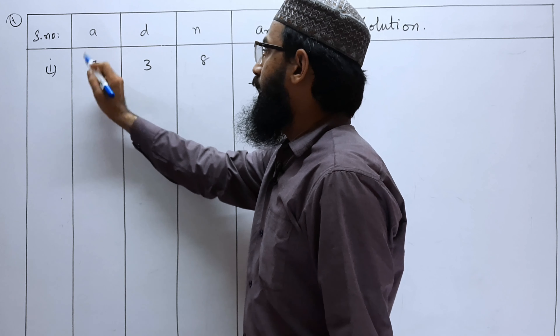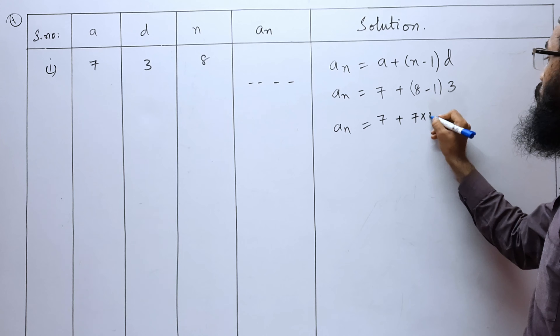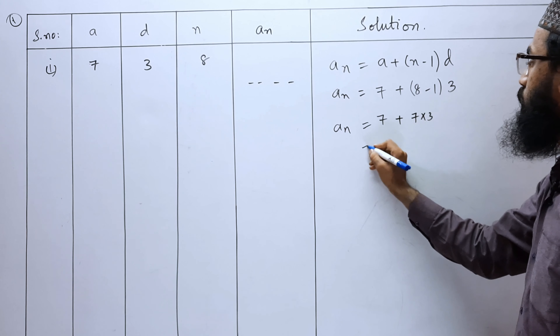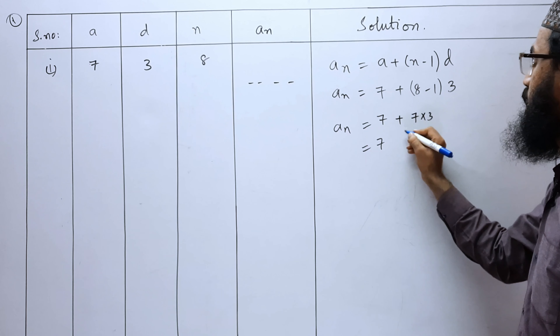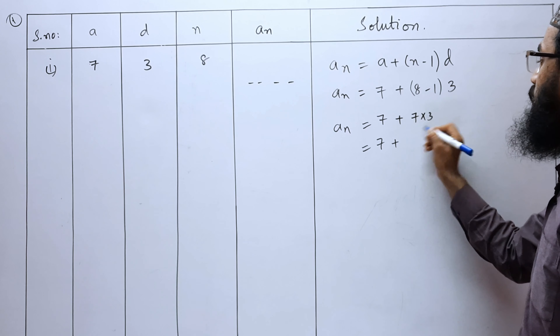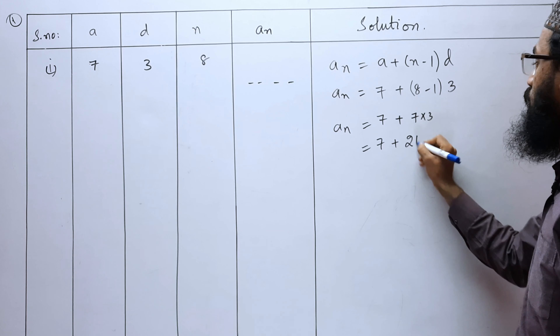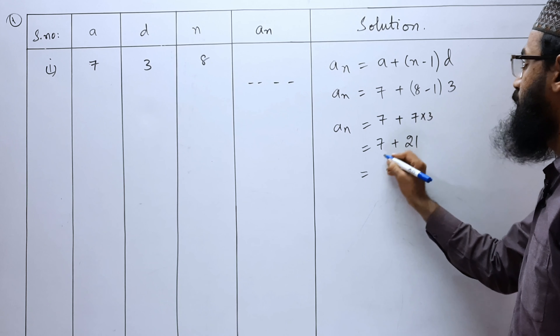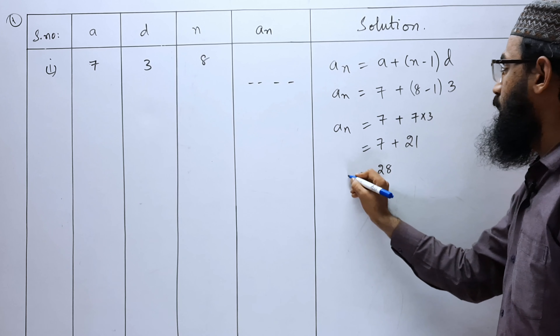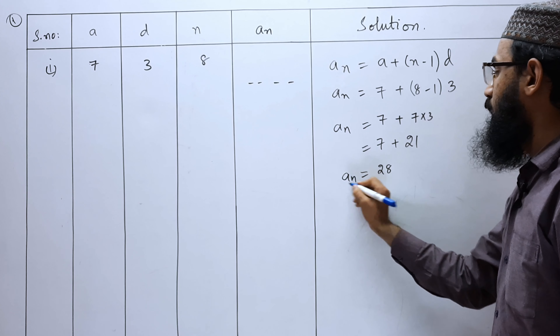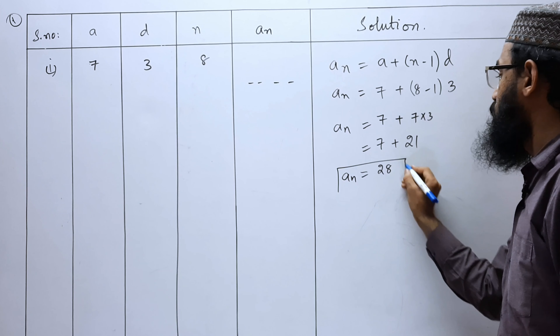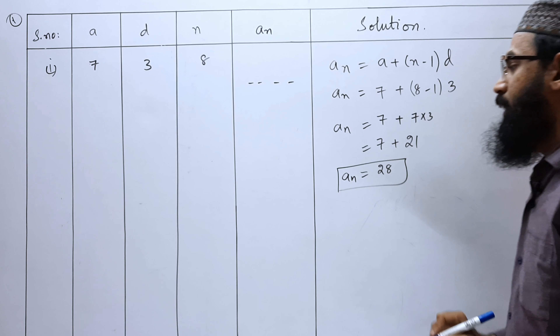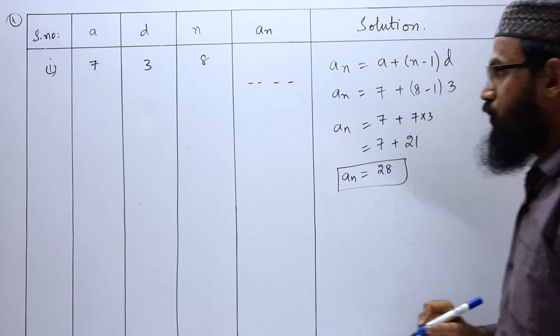7 plus (8 minus 1) is 7 into 3. So, 7 plus 21 equals 28. Therefore, AN is equal to 28.